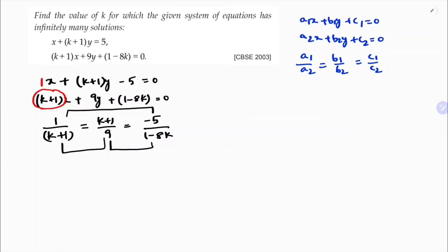Now if I take the first two, I will get 1 by (k+1) equals (k+1) by 9. If I cross multiply, (k+1) times (k+1) is (k+1) whole square equals 9.